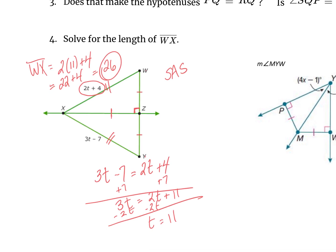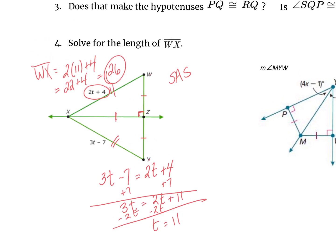We can only assume all parts of both triangles are congruent provided we are told there is a right angle and we have the information necessary for a triangle congruence theorem. Essentially, if we are told that XZ is a perpendicular bisector, we can assume that everything in the triangle is congruent.